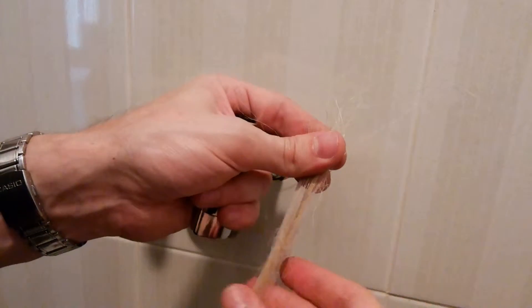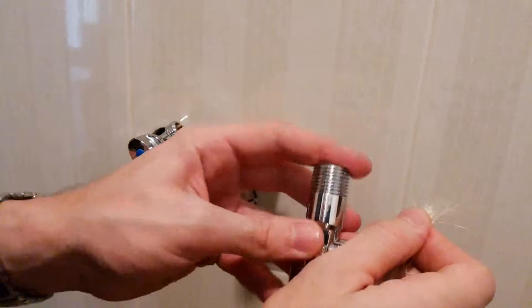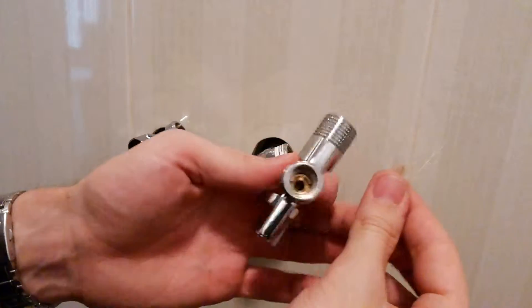If you use only teflon, then wrap the tape five times around the pipe's thread. In my case with flax, three turns of teflon tape will be enough.